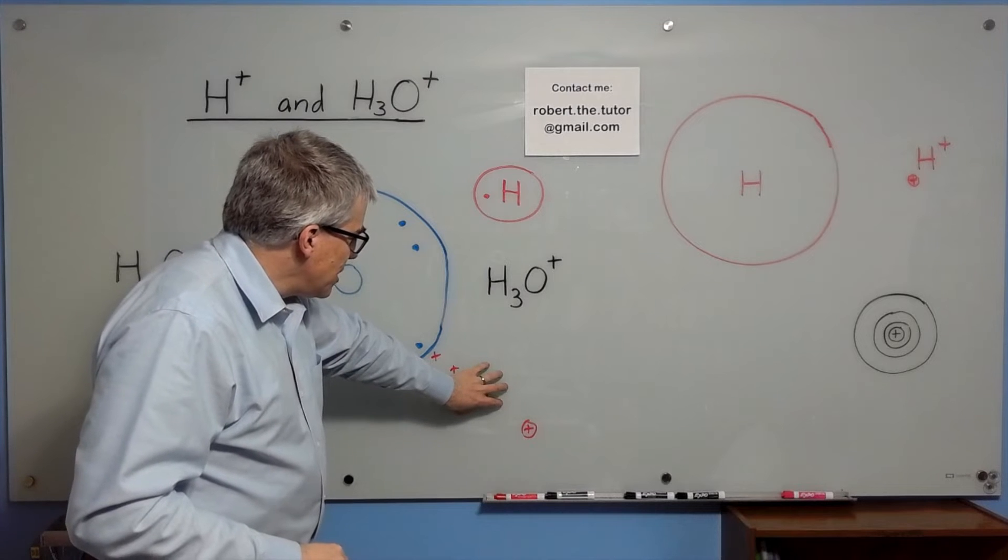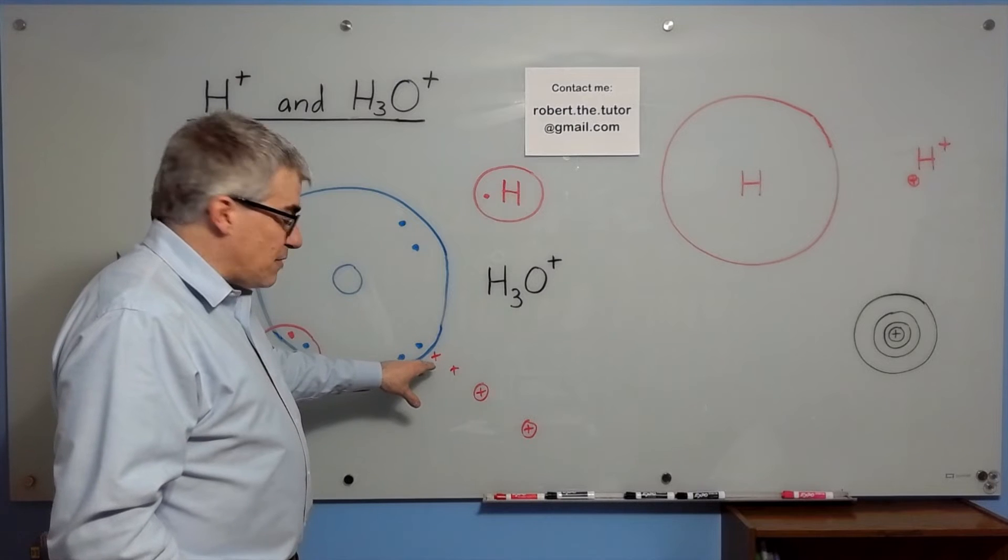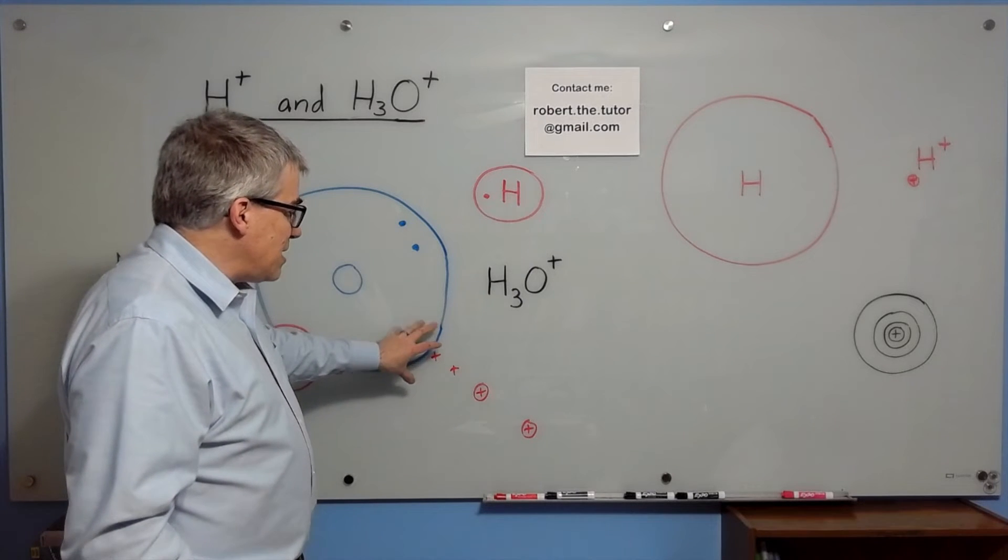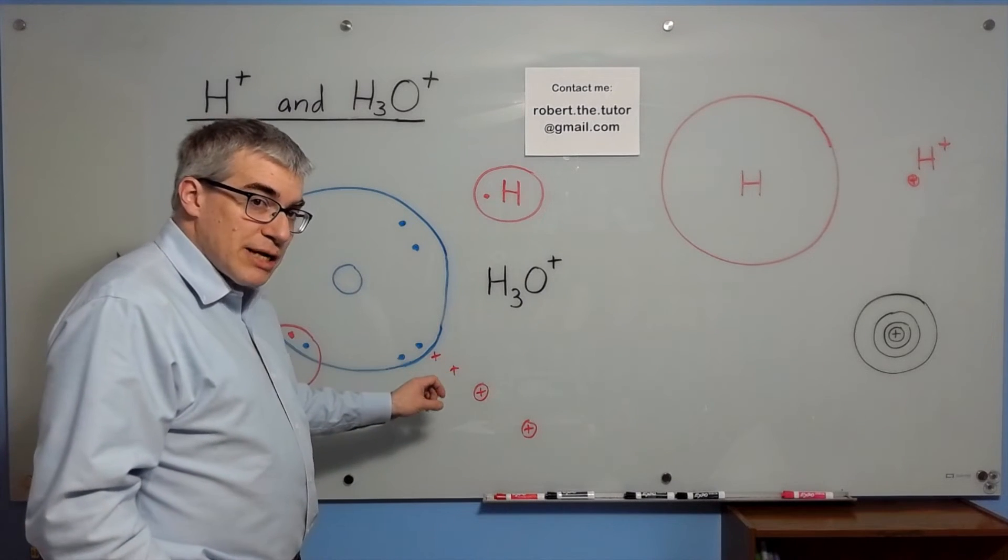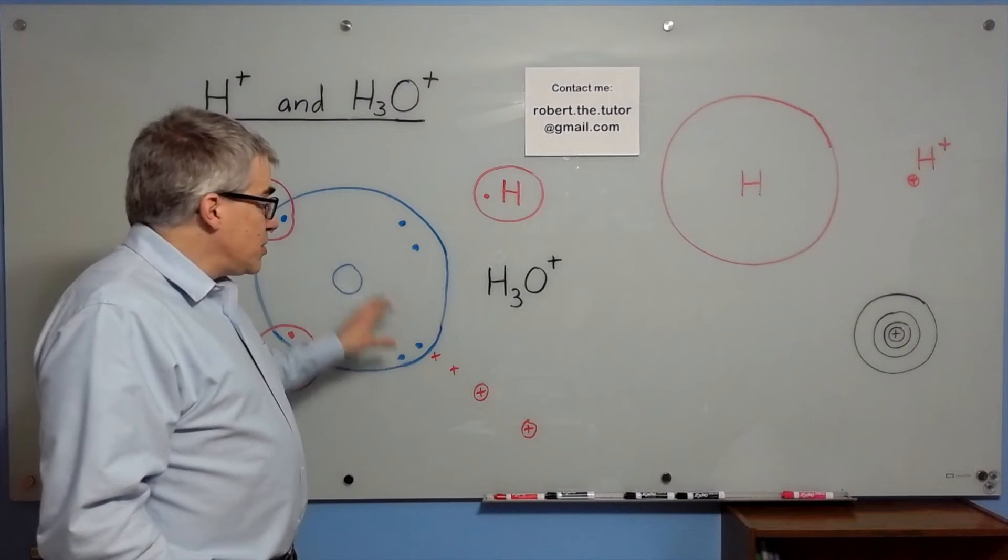And then the hydrogen ion gets even closer until eventually the electric field of that bare proton is so intense, it's basically trying to rip the two electrons off of the oxygen. And the oxygen is not going to let them go without a fight, so they bond.